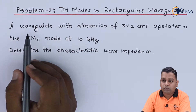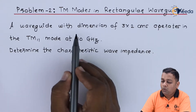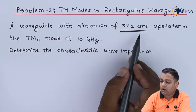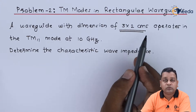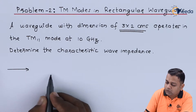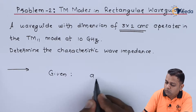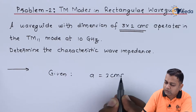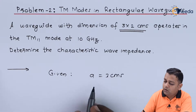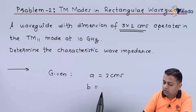The problem statement refers to a rectangular waveguide with internal cross-section dimensions of 3 by 2 centimeters. The given details are: small a equals 3 centimeters, the broader dimension called the breadth of the waveguide, whereas small b is the smaller dimension — the width of the waveguide — having the smaller value.